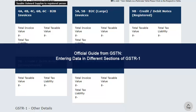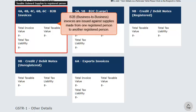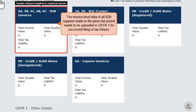In one category, invoice level details have to be furnished, whereas in the other category, summary level information has to be furnished. The first group has five tiles. The first tile summarizes the invoice details furnished in respect of B2B supplies to registered persons. B2B or business-to-business invoices are issued against supplies made from one registered person to another registered person. The invoice level data of all B2B supplies made in the given tax period needs to be uploaded in GSTR1 for successful filing.